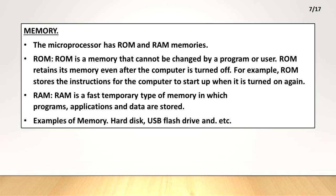Memory. The microprocessor has ROM and RAM memories. ROM is a memory that cannot be changed by a program or user. ROM retains its memory even after the computer is turned off. For example, ROM stores the instructions for the computer to start up when it is turned on again.